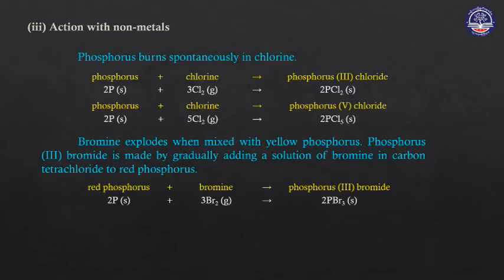Action with non-metals: halogens react with non-metals. Chlorine reacts with phosphorus to form phosphorus(III) chloride or phosphorus(V) chloride depending on conditions.